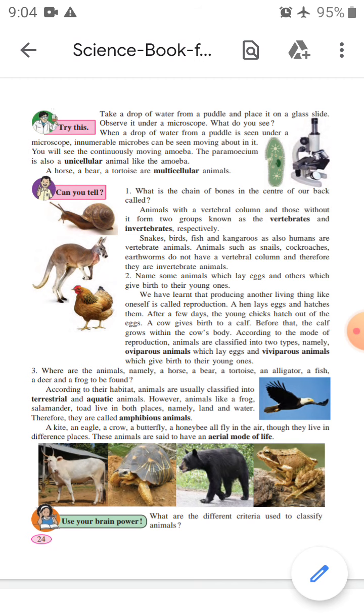Name some animals which lay eggs and others which give birth to their young ones. All the birds lay eggs. The snakes and lizards also lay eggs. All the mammals such as cat, dog, lion, tiger, and human beings give birth to their young ones.